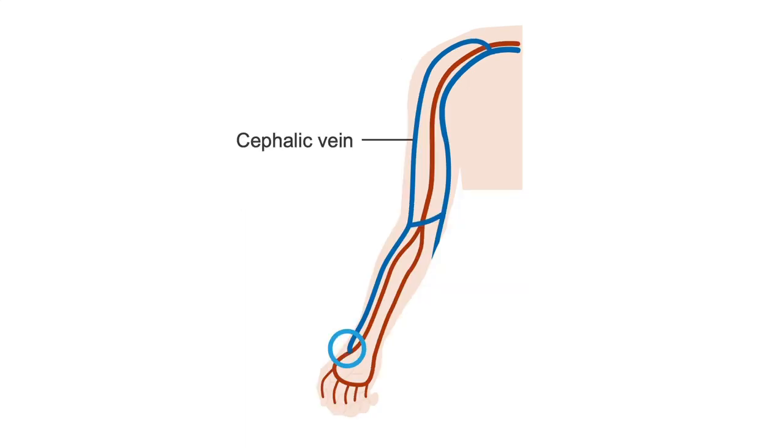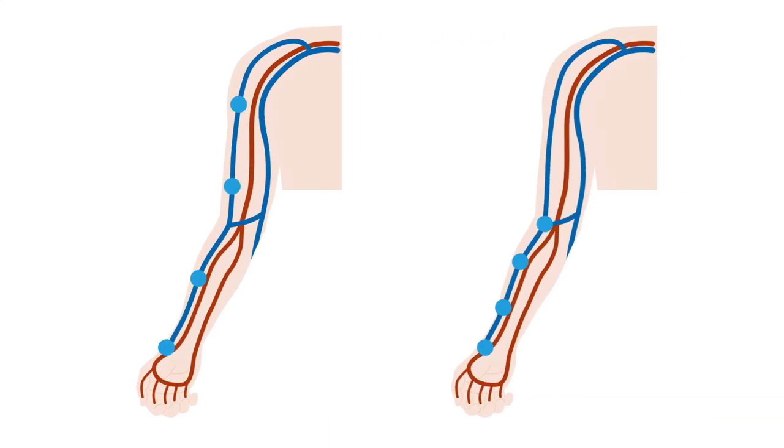However, for radiocephalic fistulas, after the anastomosis measurement, the proximal, mid, and distal cephalic outflow vein locations vary between different labs. Some use the whole arm, and others just the forearm.